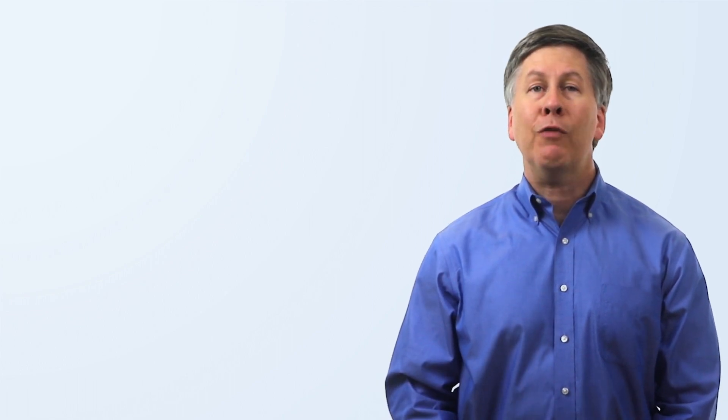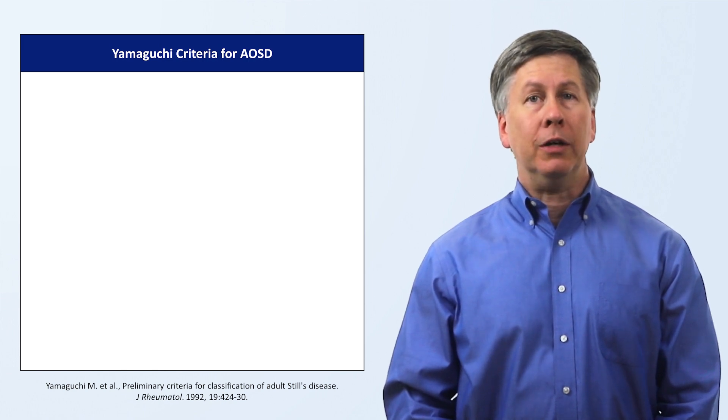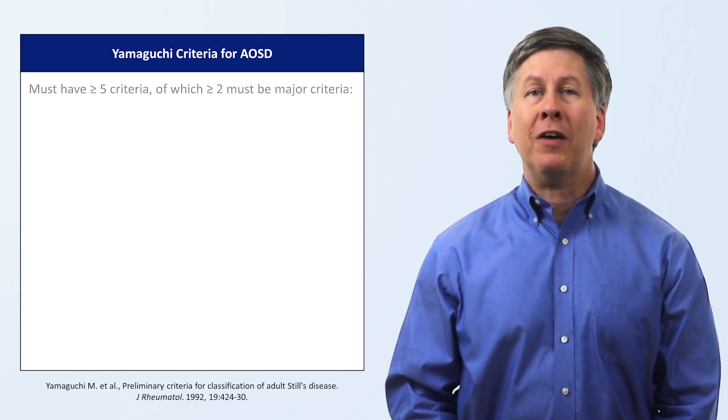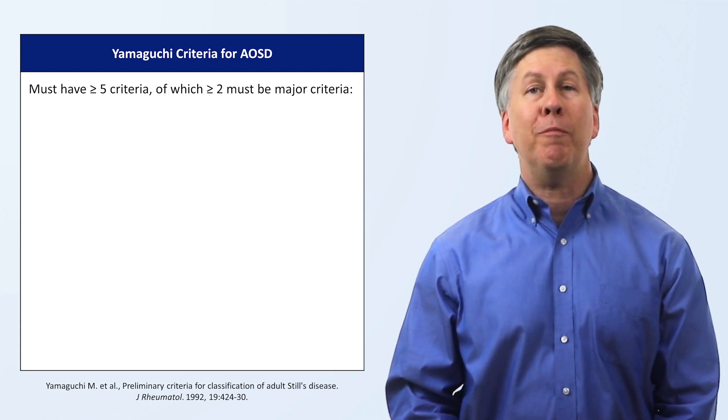To create some uniformity in how the disease is diagnosed, there are several proposed sets of diagnostic criteria, of which Yamaguchi is the most commonly used. To meet the Yamaguchi criteria, the patient must have at least five individual criteria, of which two must be from the list of major criteria.